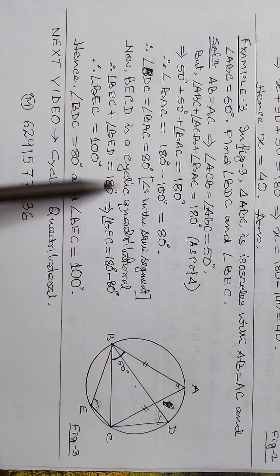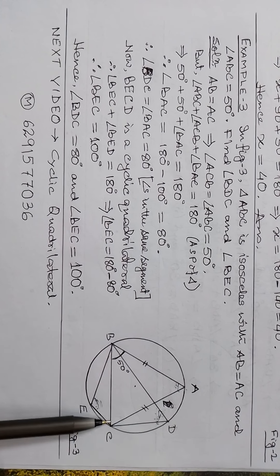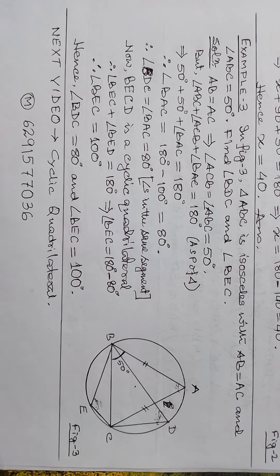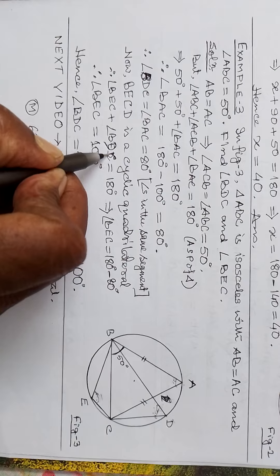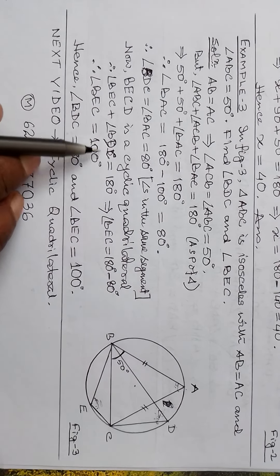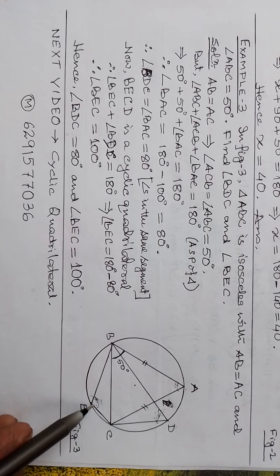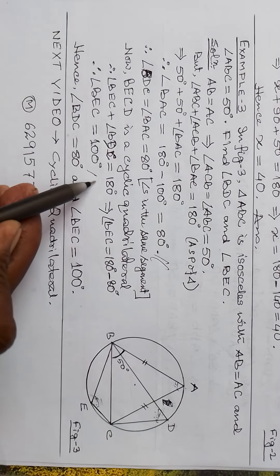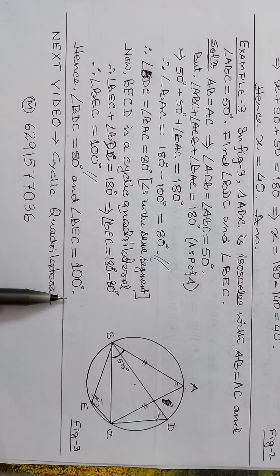Now BECD is a cyclic quadrilateral. Therefore opposite angles are supplementary: angle BEC plus angle BDC equals 180 degrees. Since angle BDC equals 80 degrees, angle BEC equals 180 minus 80 equals 100 degrees. So angle BDC equals 80 degrees and angle BEC equals 100 degrees.